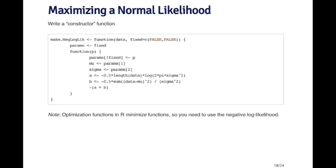Here I've written a constructor function that creates a negative log likelihood. As a note, most of the functions like optim, NLM, and optimize in R all attempt to minimize functions by default. So when you write your objective functions, if they're designed to be maximized, you have to take the negative of those functions so that you can minimize them. All the code in this example will be on the website, so you can take a look and try to run it yourself. I'm making a negative log likelihood because I want to minimize it — this is my objective function.